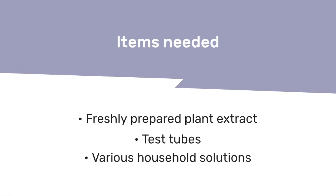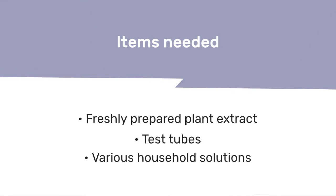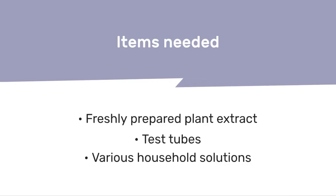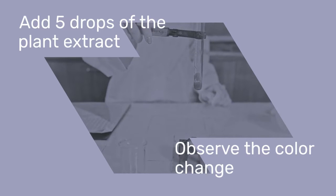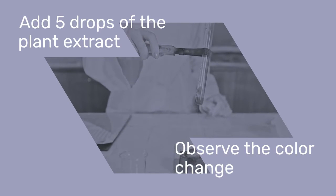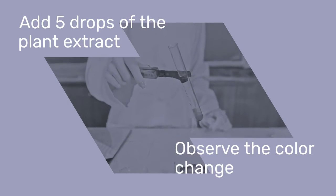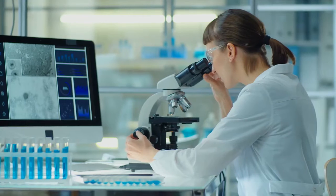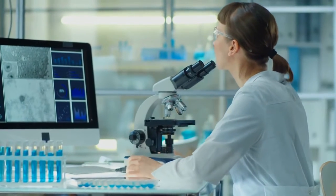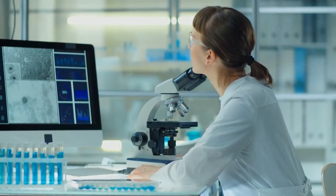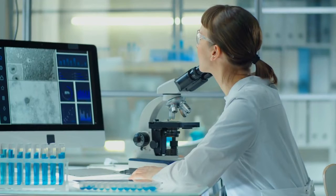First, we'll need freshly prepared plant extract, test tubes, and various household solutions like lemon juice, vinegar, and more. We'll add five drops of the plant extract to each solution and observe the color change. Then, we'll classify the solutions as acidic or basic based on the color change.